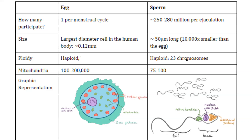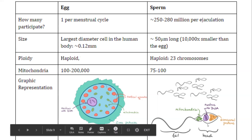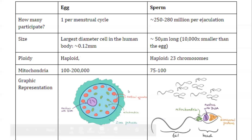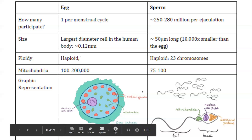They are both haploid and both have only 23 chromosomes. But there is a difference in mitochondria. You might think the sperm cell, being the motile one that has to travel, would have more mitochondria and more energy — but it's very tiny. Whereas the egg is where everything's going, and it's the egg that's going to be dividing and making a new human, so it requires a lot more mitochondria. You can see their graphical representations in the drawing.